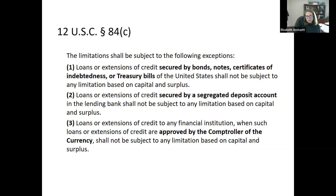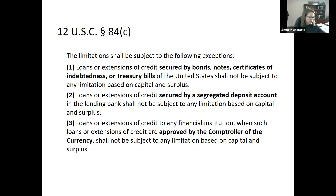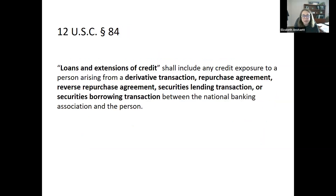There are some exceptions to these limits: loans or extensions of credit secured by U.S. government treasury bills, bonds, or notes, or loans secured by an actual deposit account, or other loans approved by the Comptroller. Essentially, if you make a loan and the borrower can secure it with cash or something that is cash-equivalent, then those limitations will not apply.